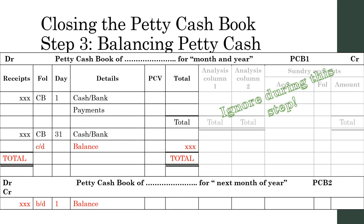Step 3: Balancing petty cash. You will balance petty cash just like you would balance any other ledger account. First, find the biggest total between the debit side and the credit side. In the petty cash book, the biggest total will always be the debit side — the opening balance or impressed amount, plus the amount received at the end of the month to restore the impressed amount. Write this total on both sides. Then the difference on the credit side, which is the balance, is the total from the debit side minus the total petty cash payments. This balance will then always be equal to the impressed amount.